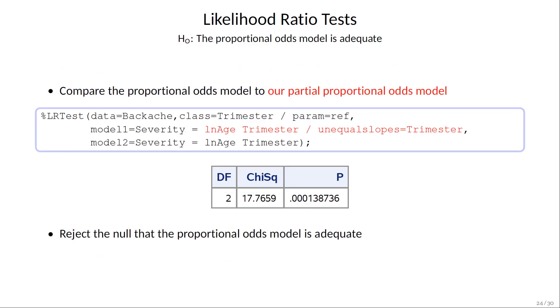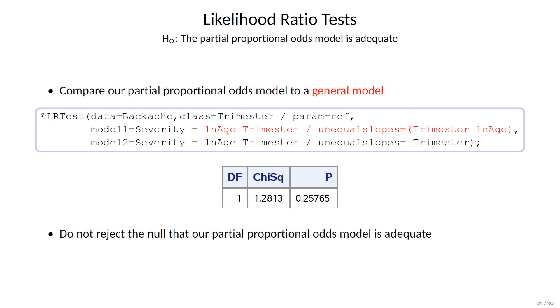We compare our model to the proportional odds model, and again we reject the null that the smaller proportional odds model is adequate. Compare our model to the 8 parameter one where log age also has separate slopes, and we do not reject the adequacy of our partial proportional odds model.